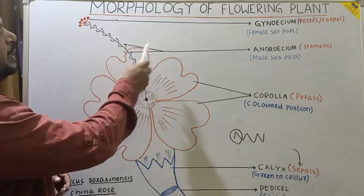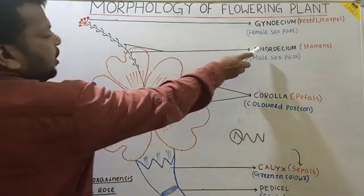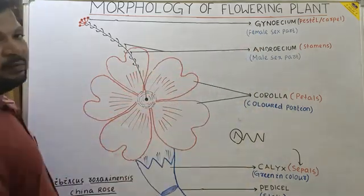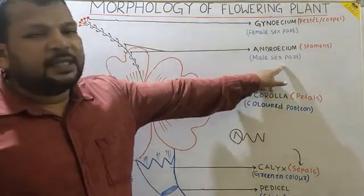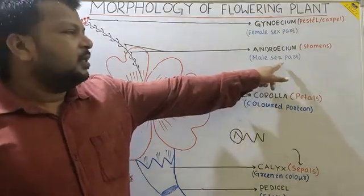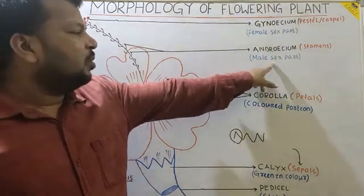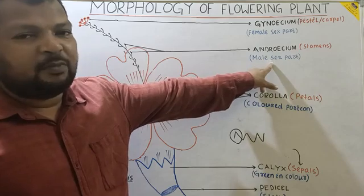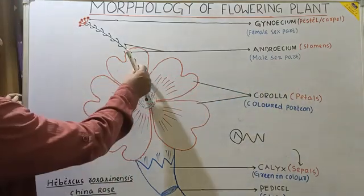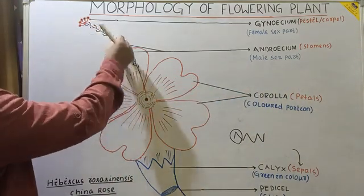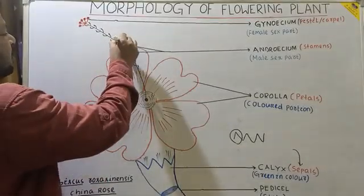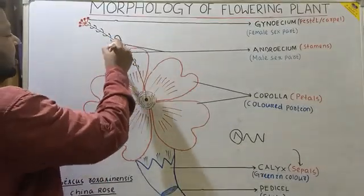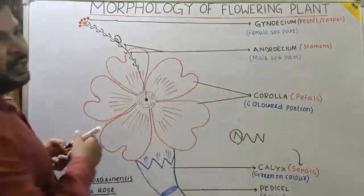Here you can see there are many small structures. These are collectively called Androecium, which is the male sex part. The individual unit of Androecium is called Stamen.